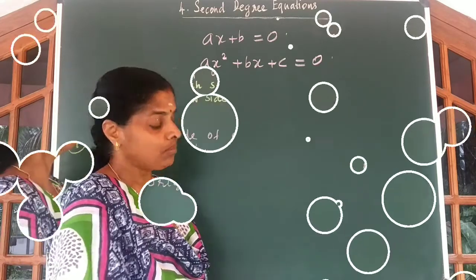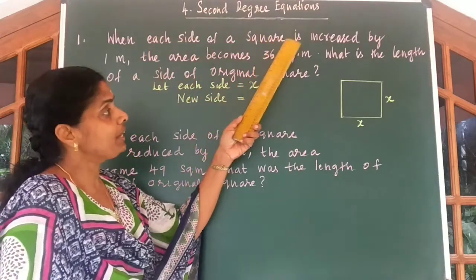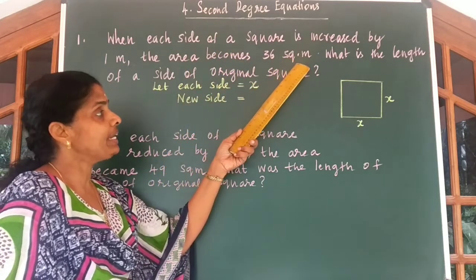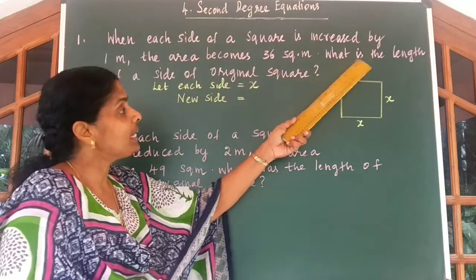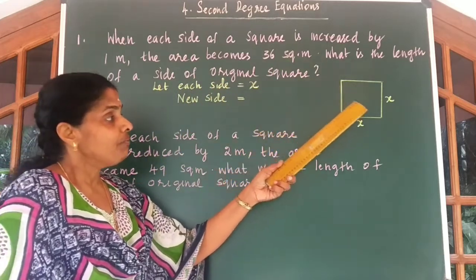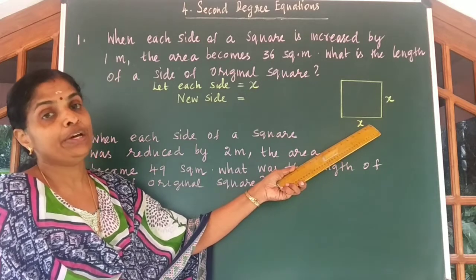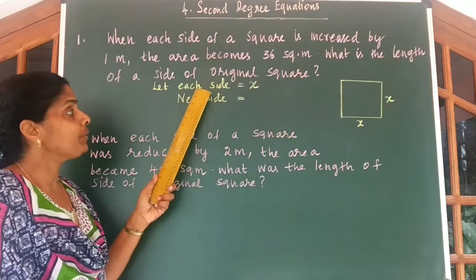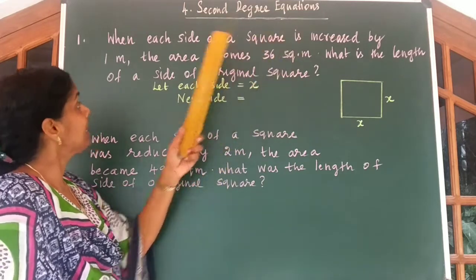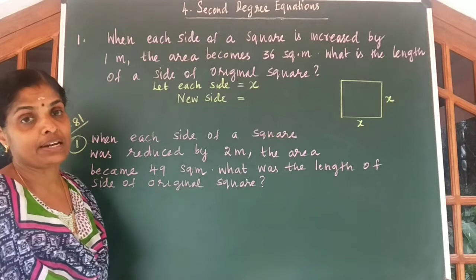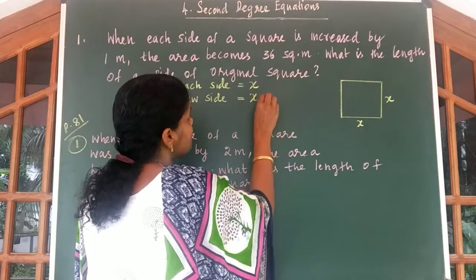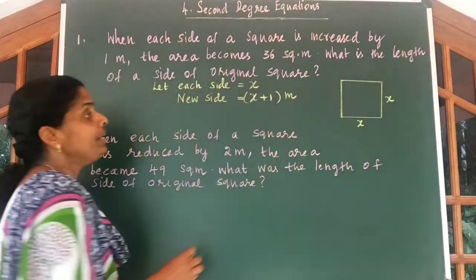Look at an example problem. When each side of a square is increased by 1 meter, the area became 36 square meters. What is the length of a side of the original square? Talking about the original square, we don't know the side, so I took each side to be equal to X. We are given each side is increased by 1 meter, so the new side becomes X plus 1 meter.